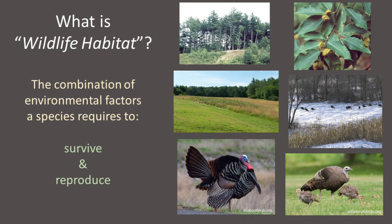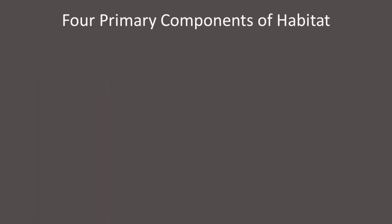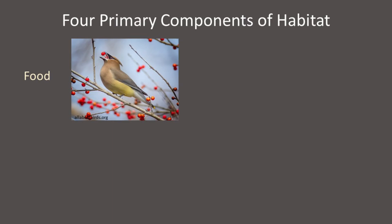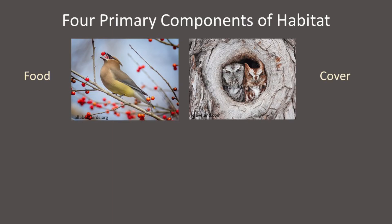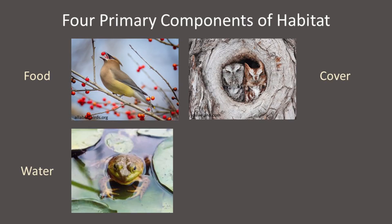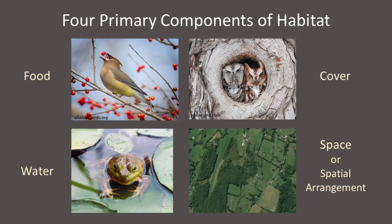Now, while each wildlife species has its own set of specific features that make up its required or preferred habitat, in its simplest terms, the habitat of all species is composed of four primary components, and these are food, cover, water, and space, or spatial arrangement.